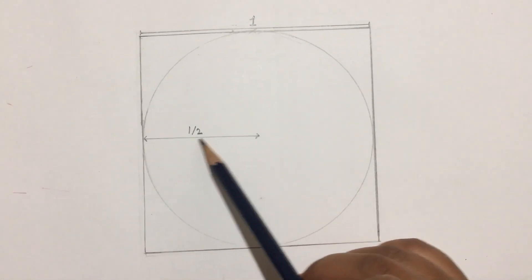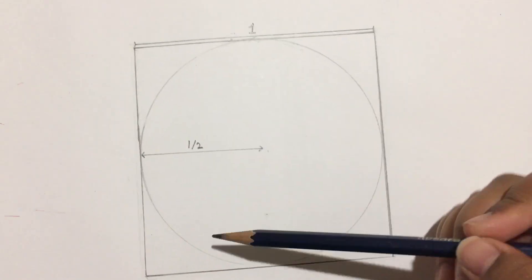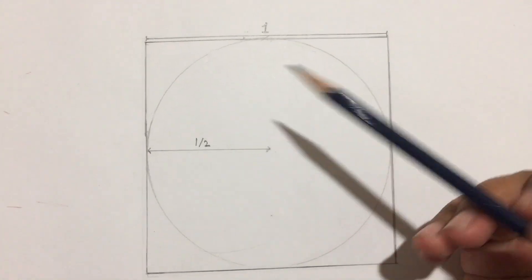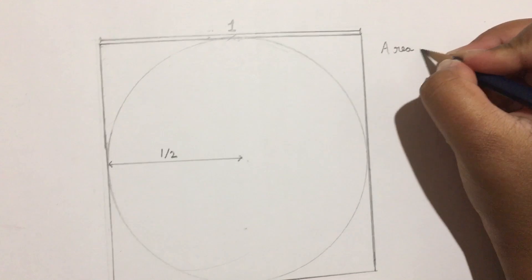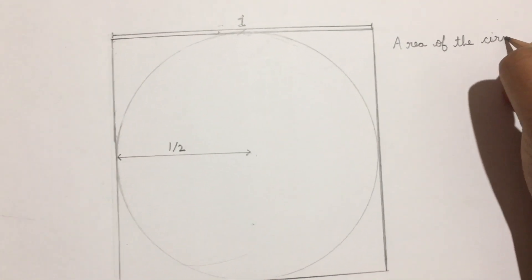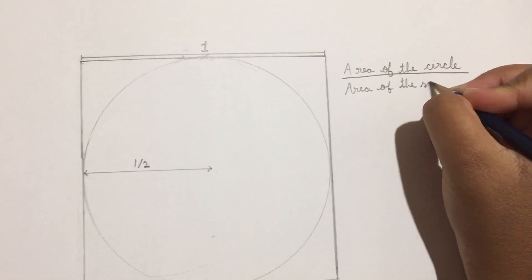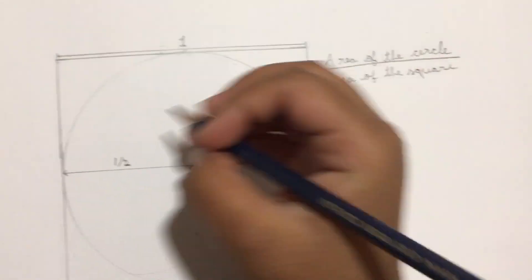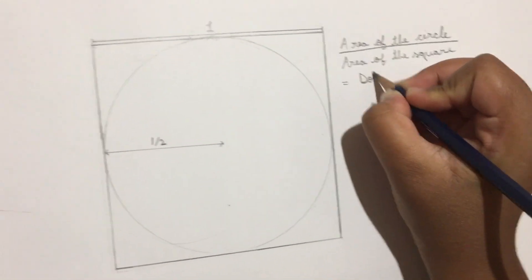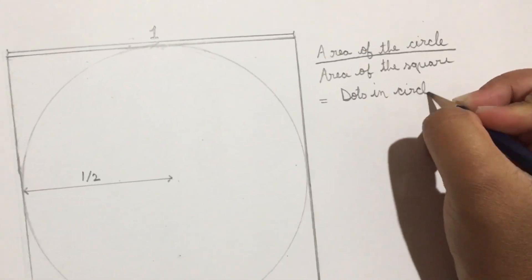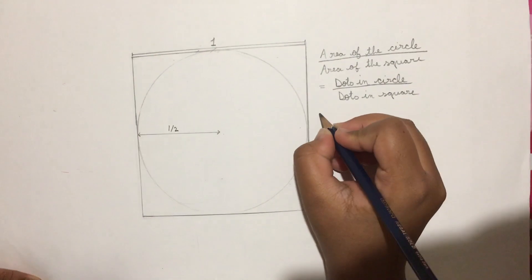So the radius of the circle would be 1/2. This is because the length of the side of the square is the diameter of the circle. The logic behind calculating pi is that the area of the circle divided by the area of the square should equal the dots inside the circle divided by the total dots.